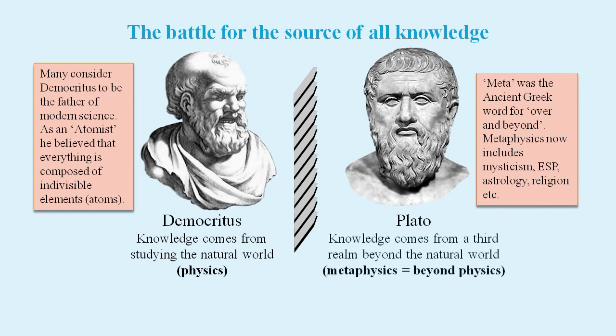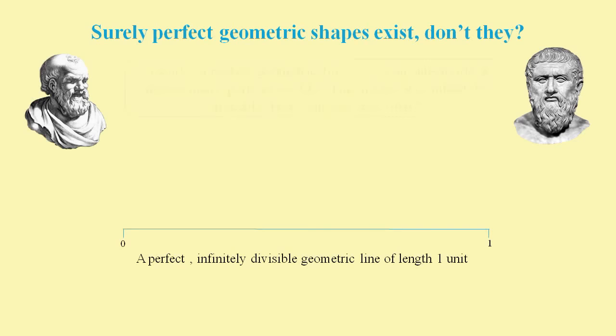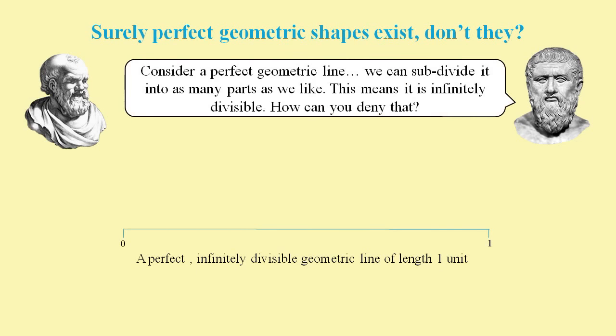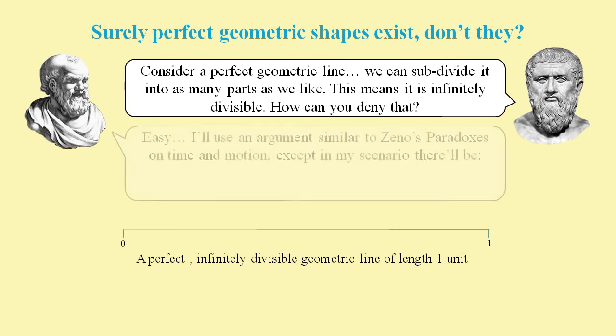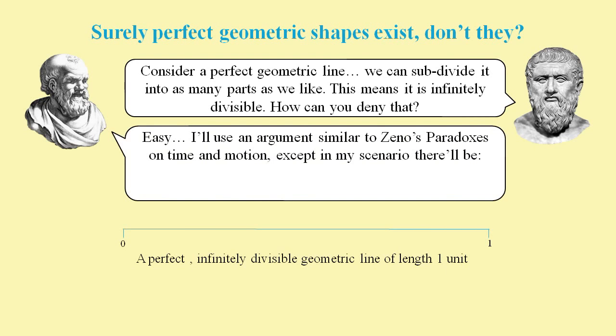In Plato's idealized world, a line could always be divided into as many parts as you like. But Democritus had a clever counter-argument, derived from Zeno's paradoxes. Zeno was another Greek philosopher who had highlighted that time and motion could appear to be paradoxical. But unlike Zeno's paradoxes, Democritus' argument had no passage of time and did not involve any motion.